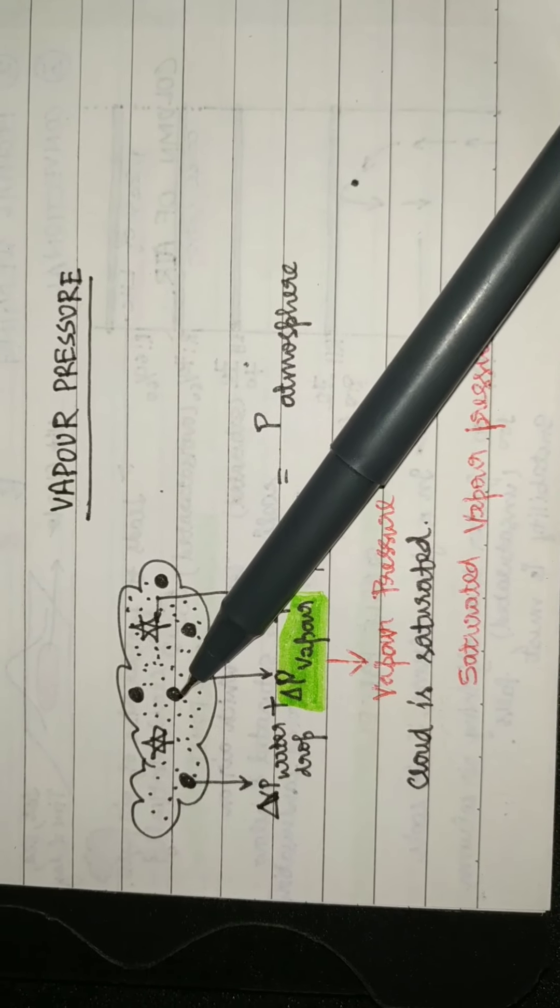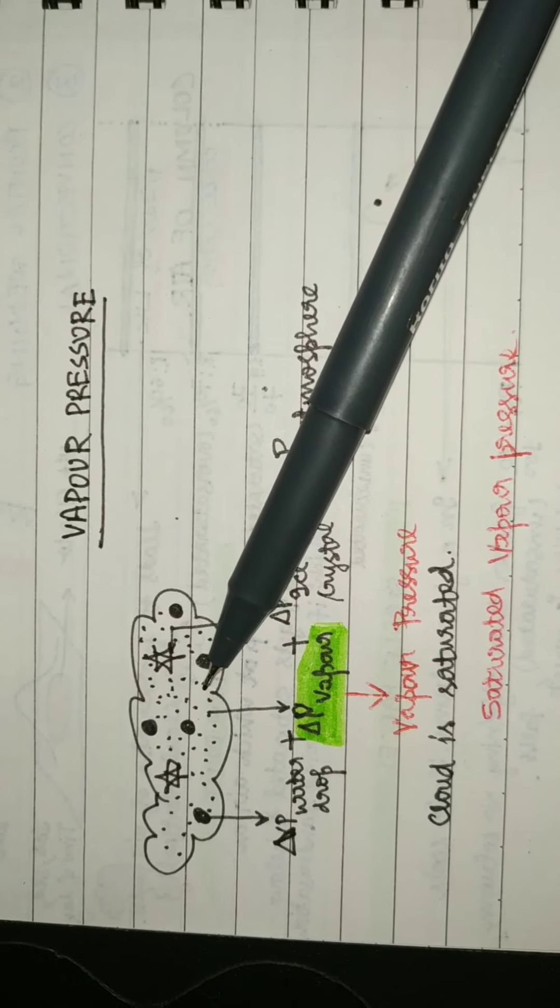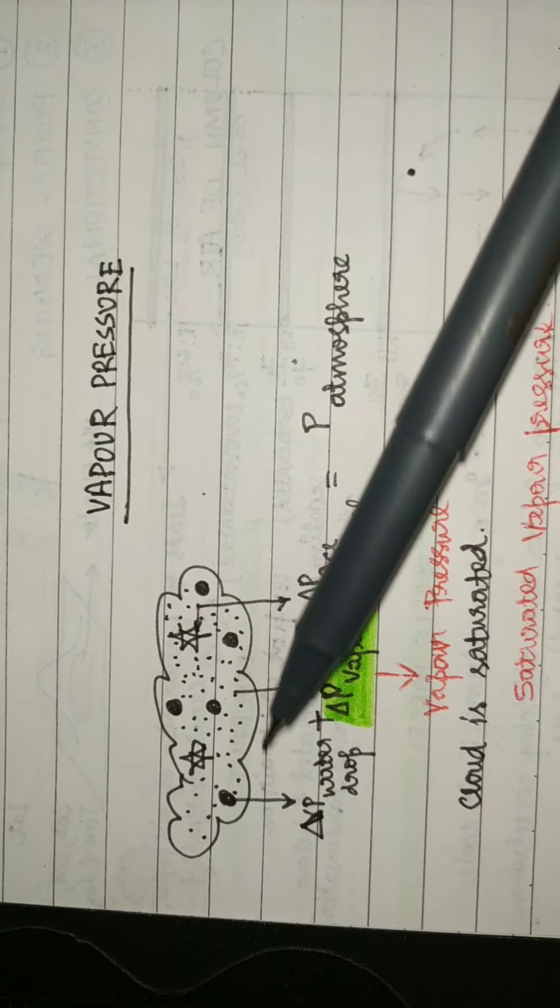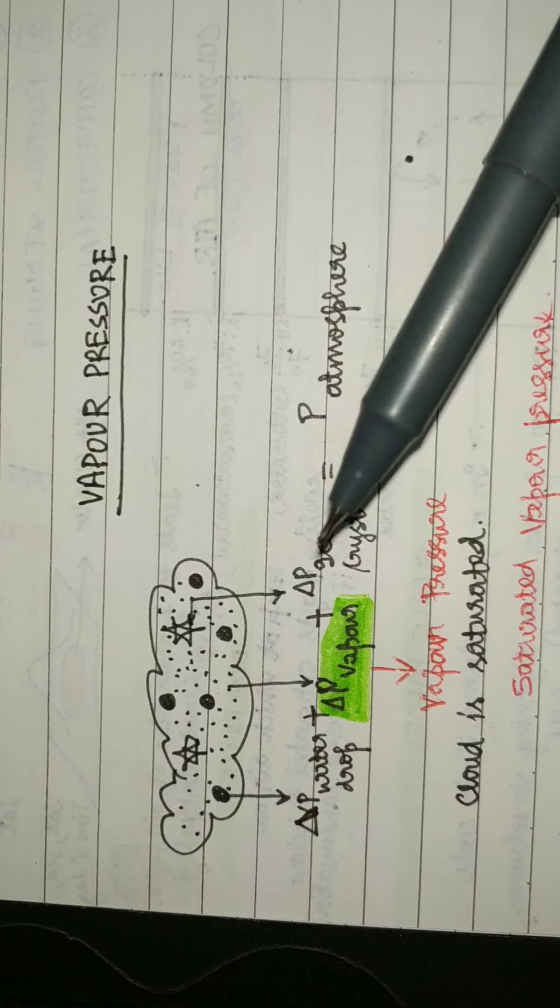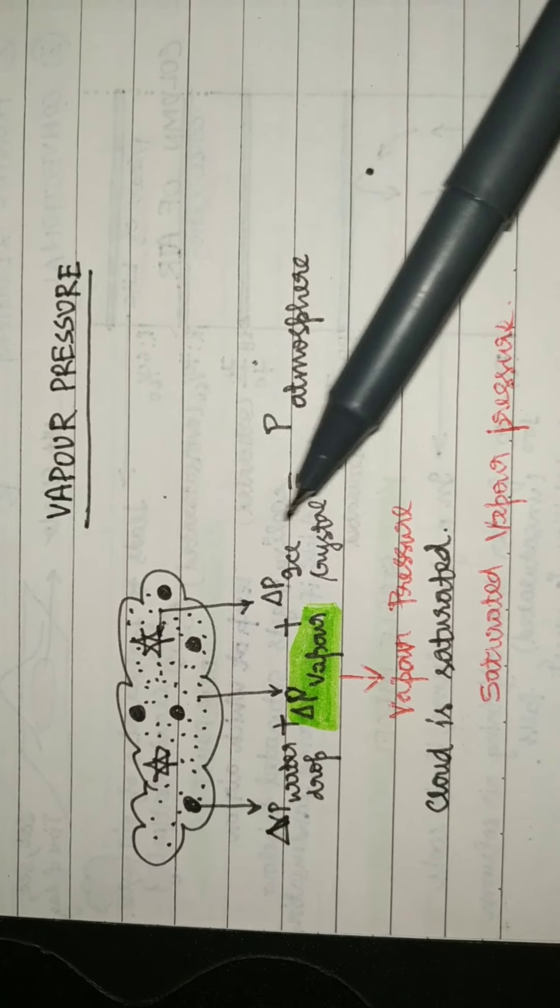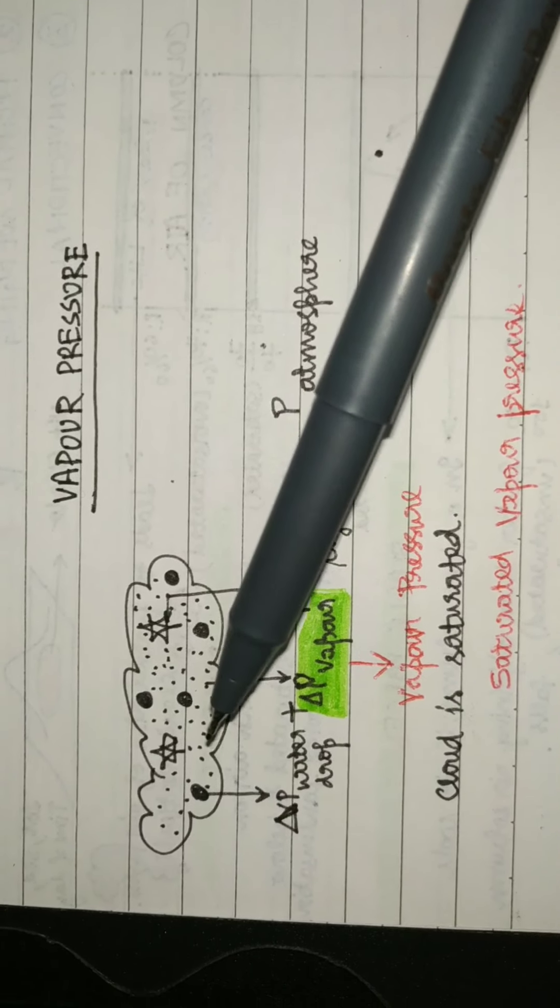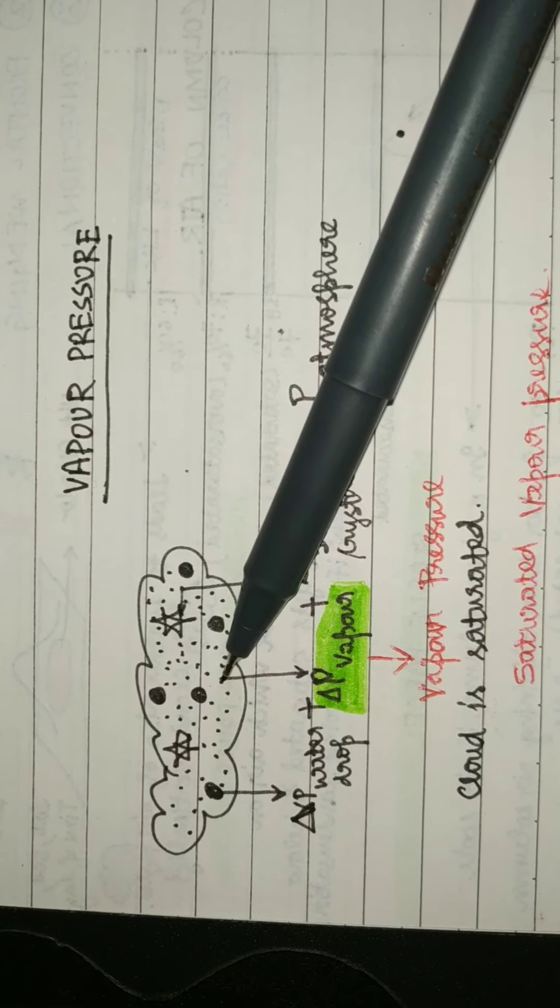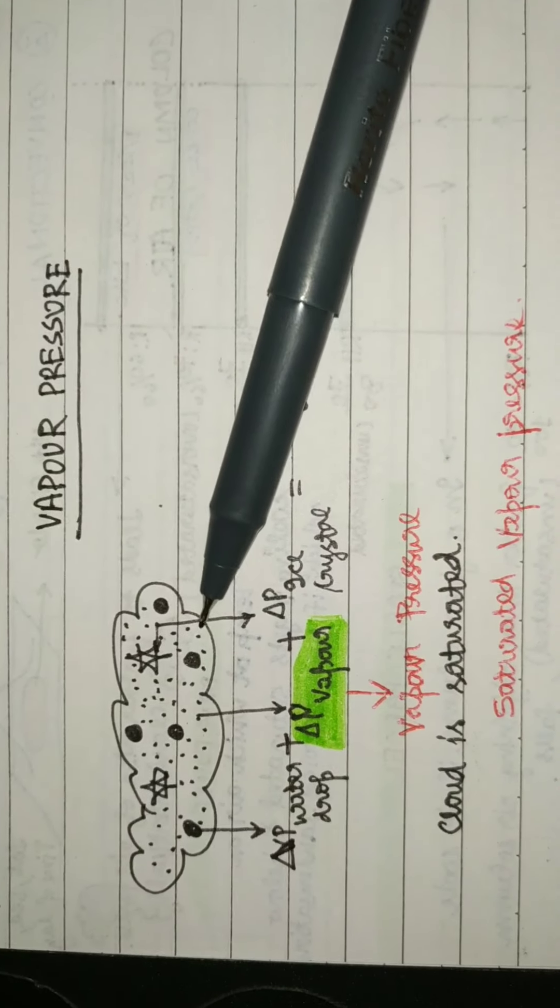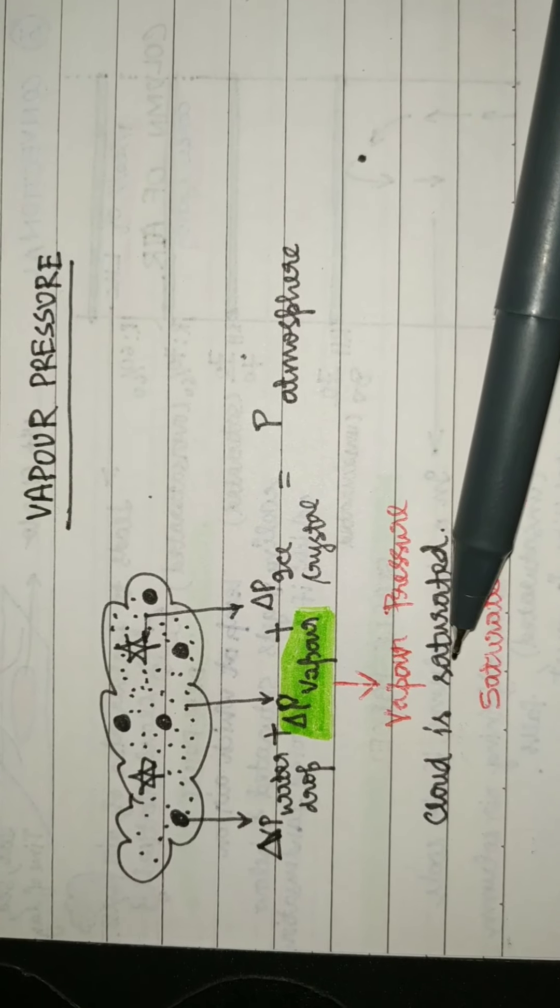Each of these particles exert their pressure on the surface or any particle, and the sum is equal to the atmospheric pressure. The pressure exerted singly by the water vapor is known as vapor pressure.